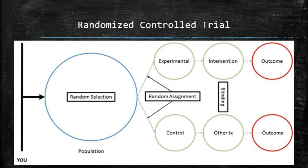This is the only way we can make sure that the people who get the intervention will be similar to those who don't. Fourth, there must be carefully defined outcome measures and they must be measured before and after the treatment occurs.